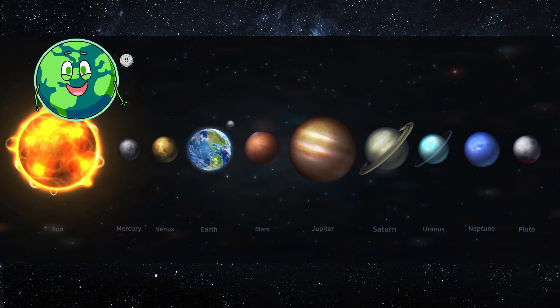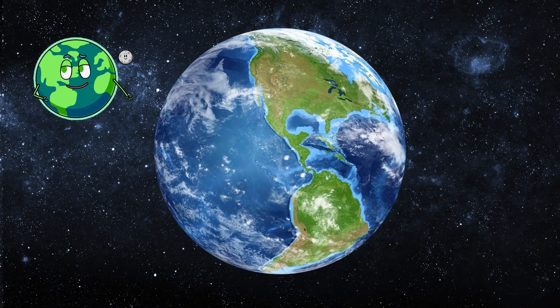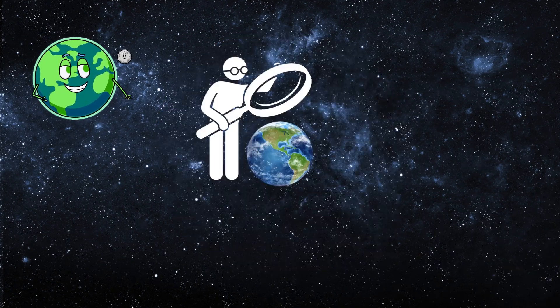Earth is the third planet from the sun, and it's the only place we know that has life. It's like a big, beautiful blue and green marble floating in space.